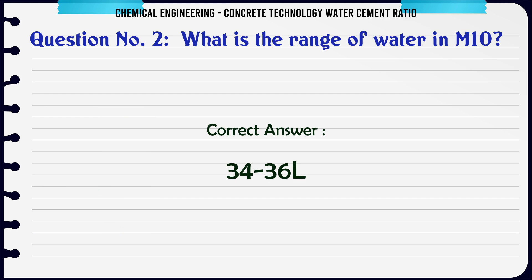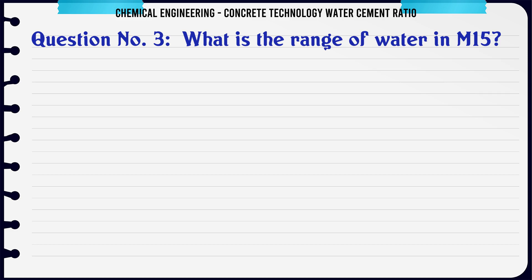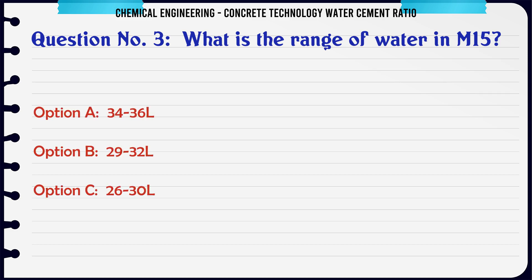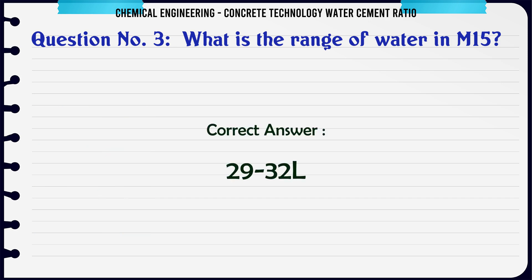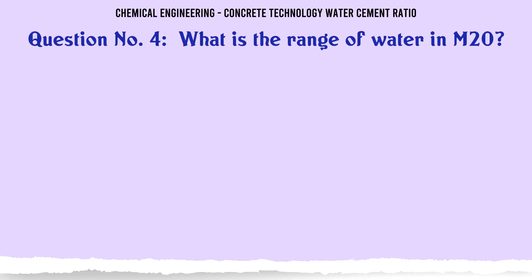What is the range of water in M15? A. 34–36 L, B. 29–32 L, C. 26–30 L, D. 21–27 L. The correct answer is 29–32 L.